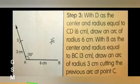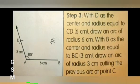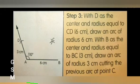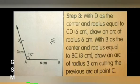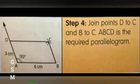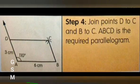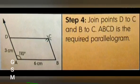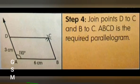With B as center and radius equal to BC, 3 cm, draw an arc cutting the previous arc at point C. Step 4: Join points D to C and B to C. Hence we get parallelogram ABCD.